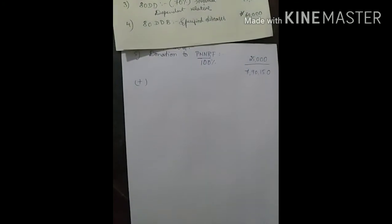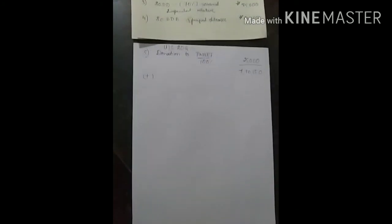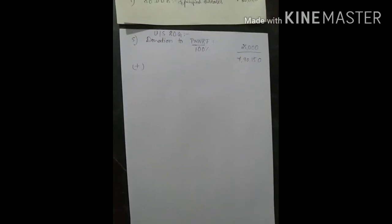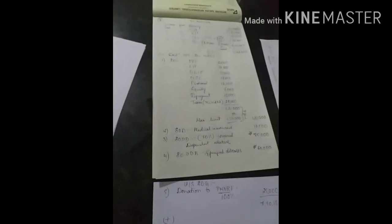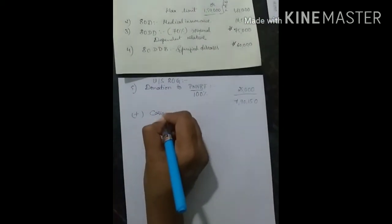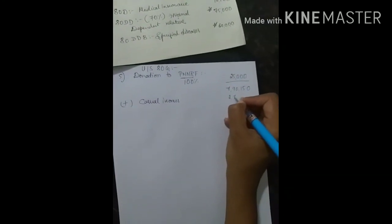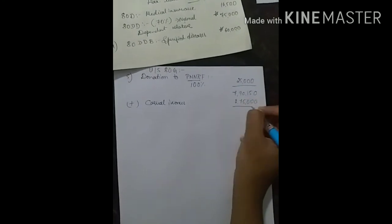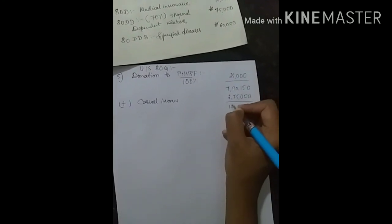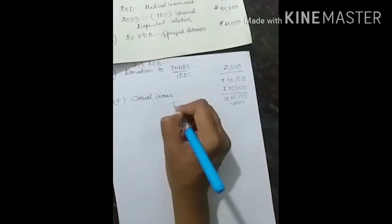Next is under section 80G, Prime Minister National Relief Fund. Total deductions are 3,07,500. Subtract from gross total income 11,40,000, we get total income 8,32,500. Add STCG 1,50,000 and casual incomes 2,75,000.